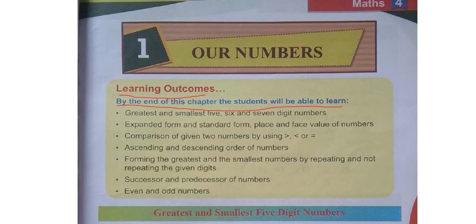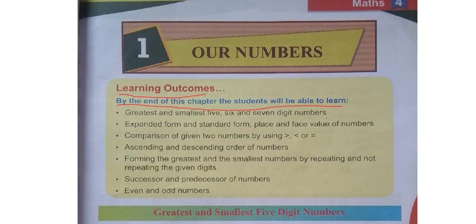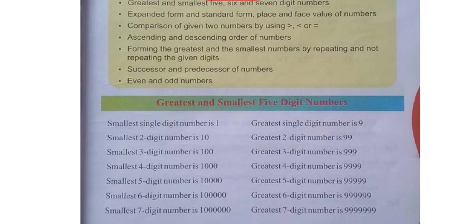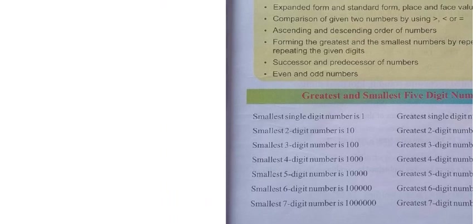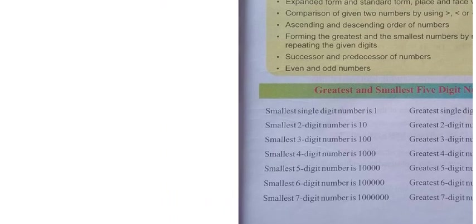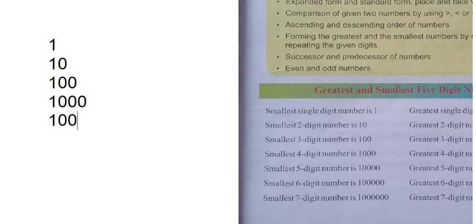Now let's look at greatest and smallest 5, 6, and 7 digit numbers — I hope you all already know this. I will make a note here. Just concentrate. The numbers are: 1, 10, 100, 1000, 10,000, and 1 lakh on one side, and on the other side: 9, 99, 999, 9999, 99999, and 999999.